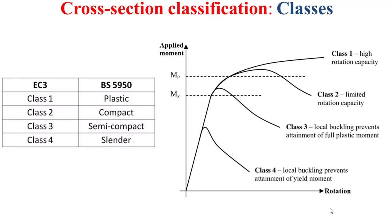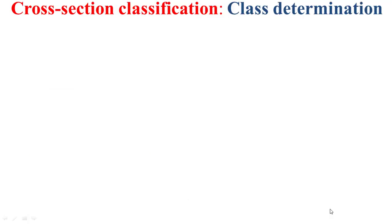This rotation capacity limitation is caused by local buckling. For the Class 3 cross-section, it cannot perform a full plastic moment resistance due to local buckling, which occurs before reaching the plastic bending moment. Finally, for the Class 4 cross-section, local buckling occurs before reaching the elastic bending moment.